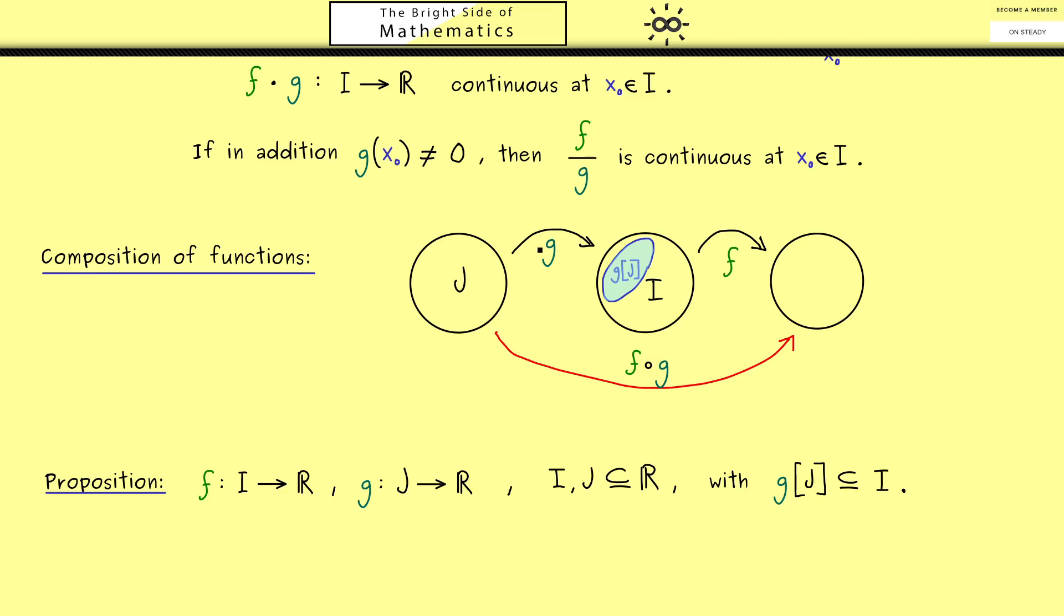Okay, now for the continuity we get: if g is continuous and f is continuous, also the composition f after g is continuous. However, as before we only have to put in continuity at one given point, and now it's x₀ in the set J. For this reason, for the function f we have to look at another point in the set I, and of course this should be the image of x₀ under g.